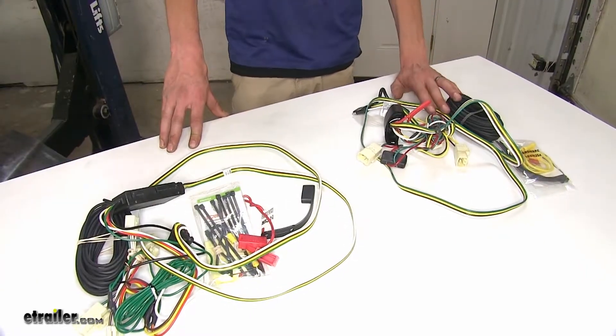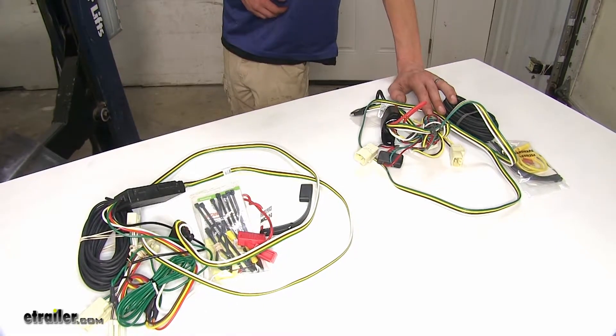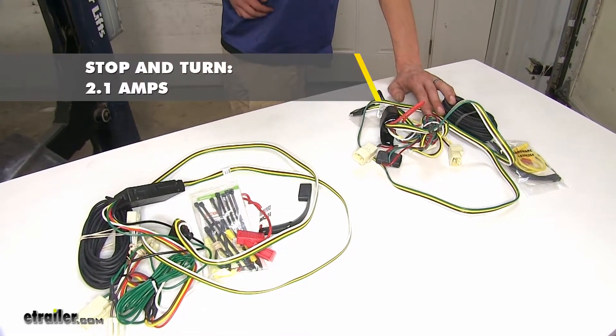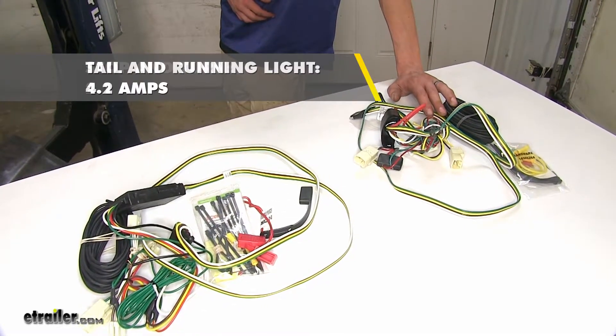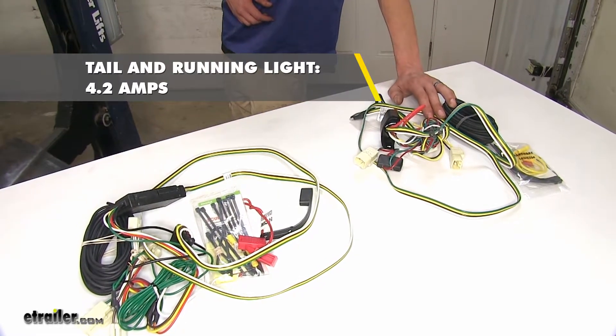Our Tekonsha wiring harness, on the other hand, puts out 2.1 amps for the stop and turn signal circuits, and 4.2 amps for the tail light and running light circuits.